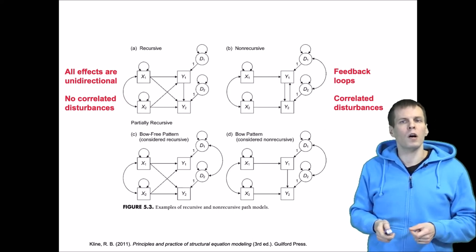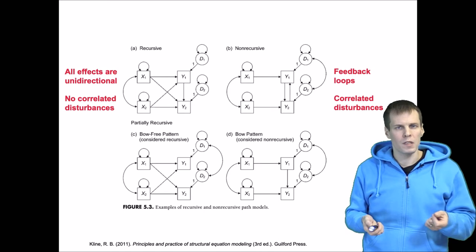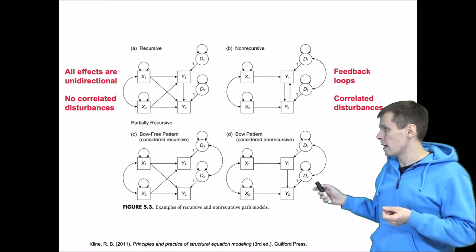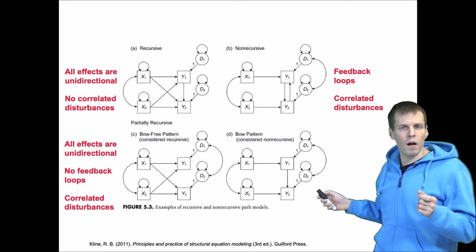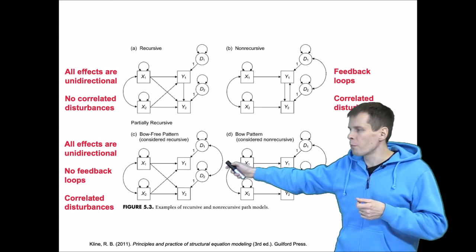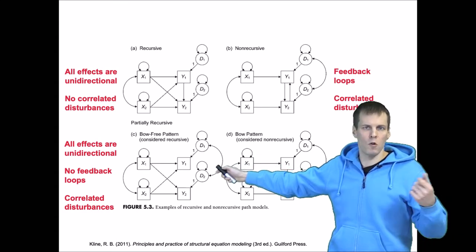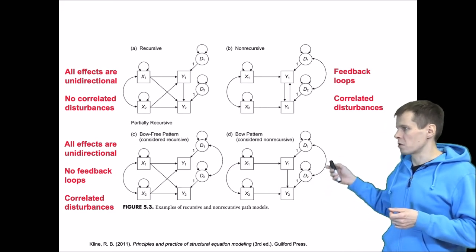There are also cases where you have correlated disturbances but you don't have feedback loops. These two cases differ in an important way. This is a bow-free pattern and it's considered recursive, and this is considered non-recursive because there's a bow pattern.